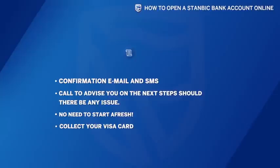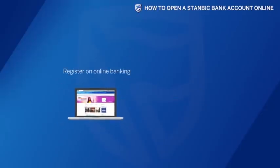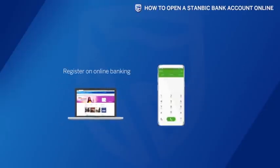Now that you've opened an account online, simply present your national ID and reference number to collect your Visa card and enable cash withdrawals. Register on online banking and then on mobile, star 290 hash.